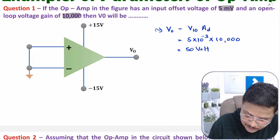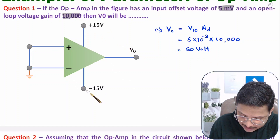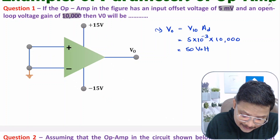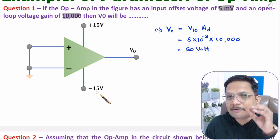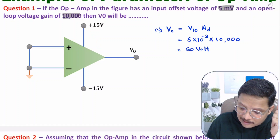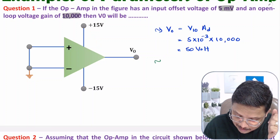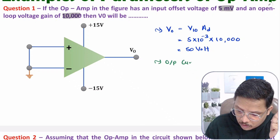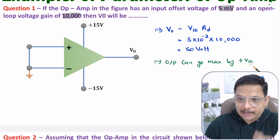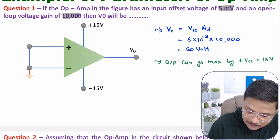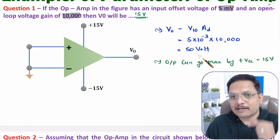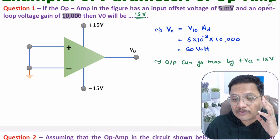But if you observe, here VCC and minus VEE have a range of plus 15 to minus 15. So the output cannot exceed 15 volt — your output has a limit. It can go maximum up to 15 volt only. So here the output can go max to plus VCC, which equals 15 volt. Your output will be plus 15 volt; it cannot go up to 50 volt. So you should be clear about these fundamentals.